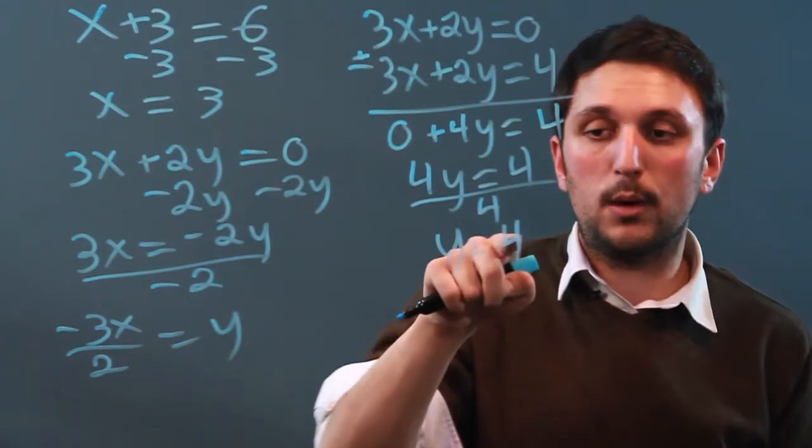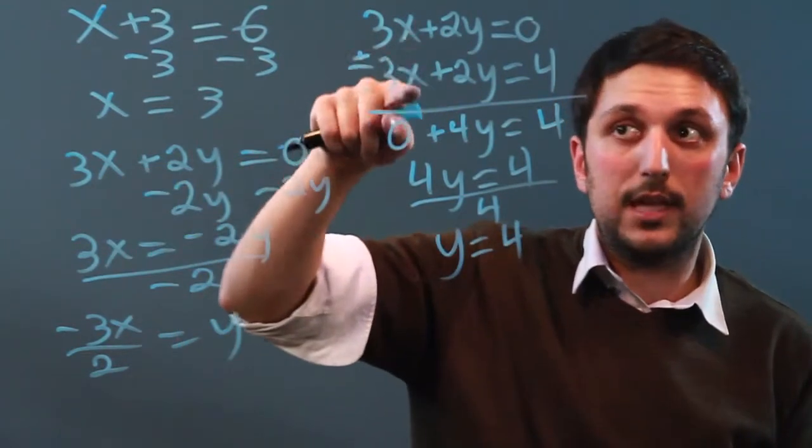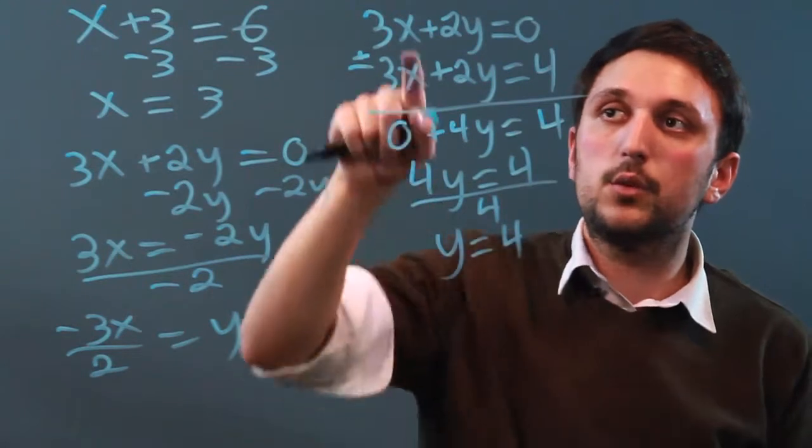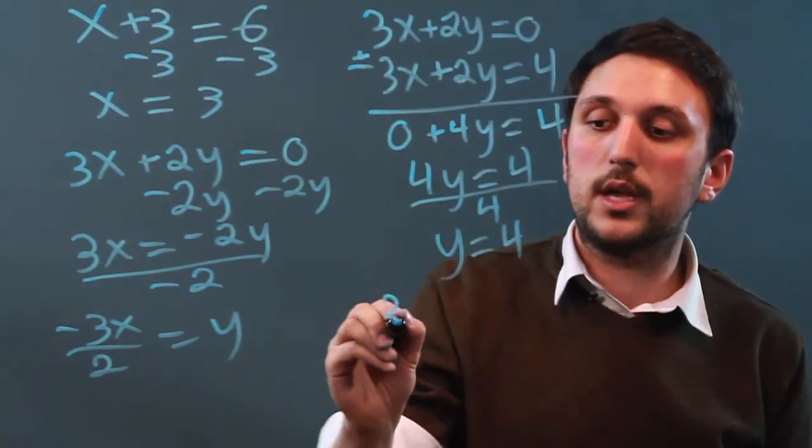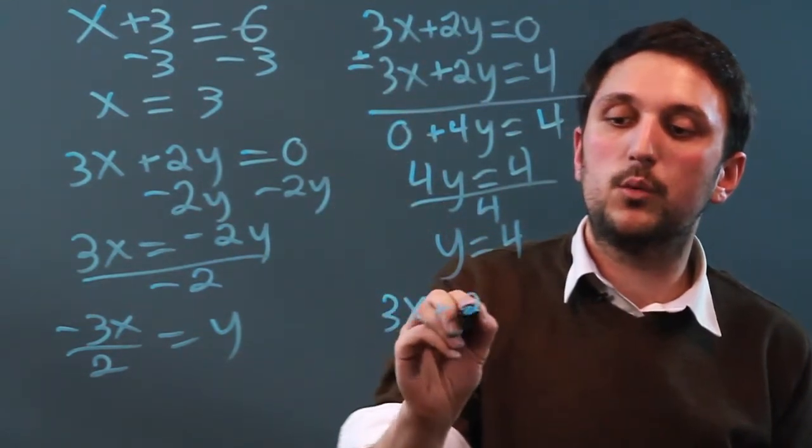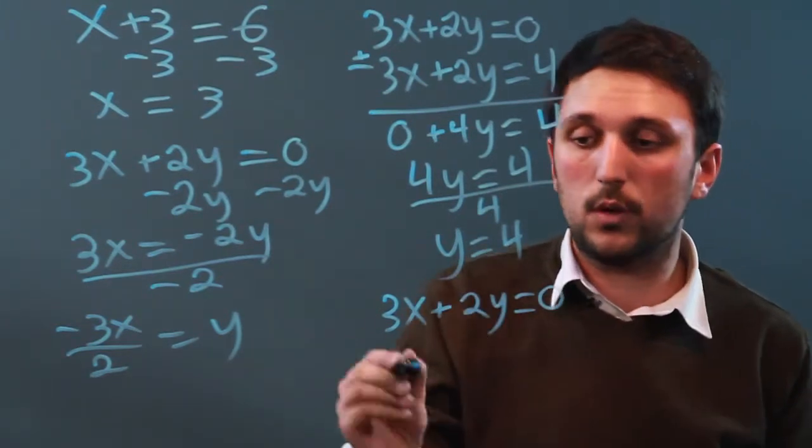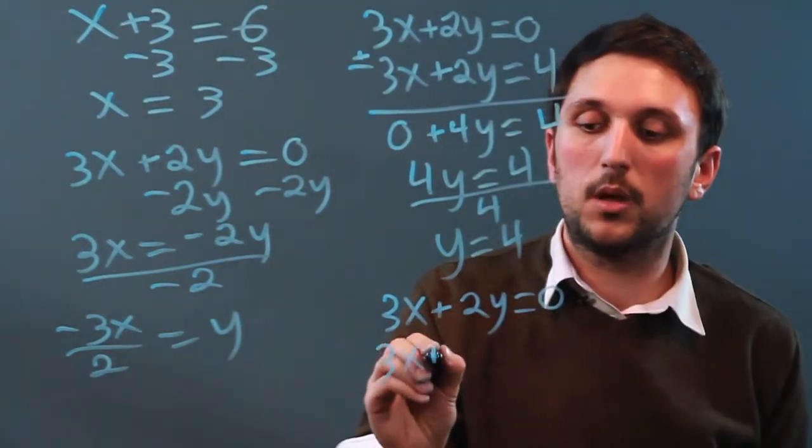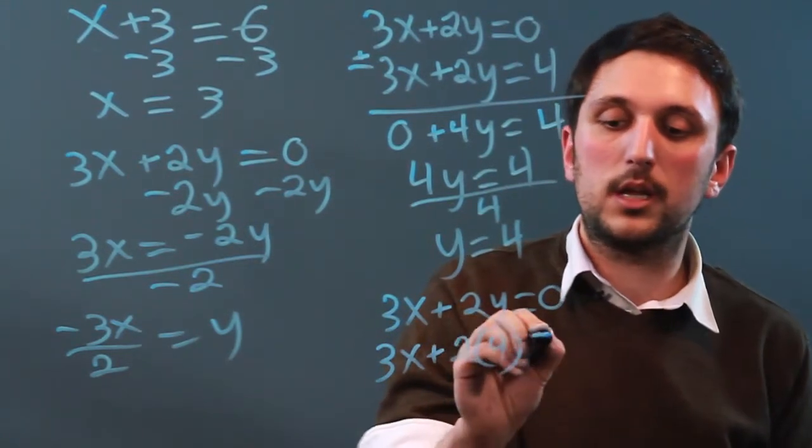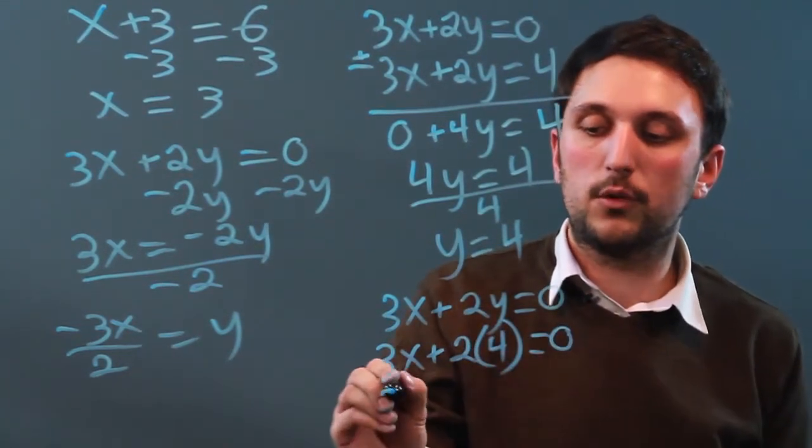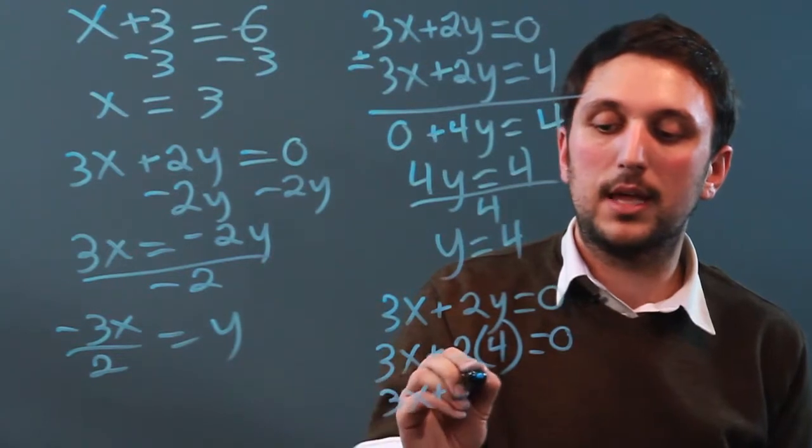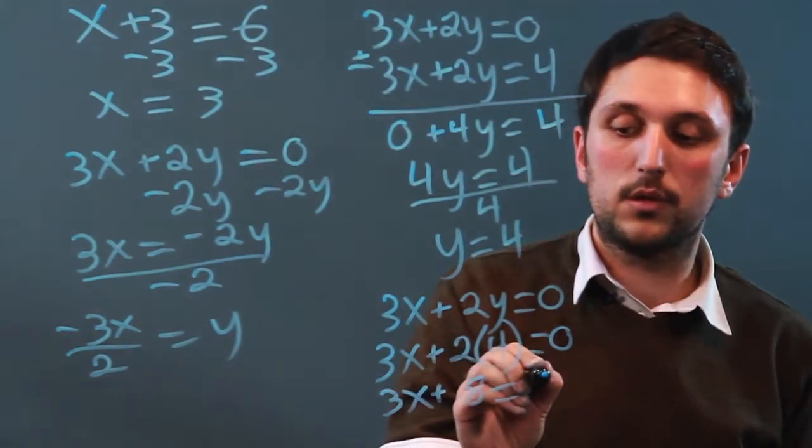Now we take that y value and we plug it back in to one of these two equations. Let's do the first one. So 3x plus 2y equals 0. But we know that y equals 4. So we say 3x plus 2 times 4 equals 0. So 3x plus 8 equals 0.